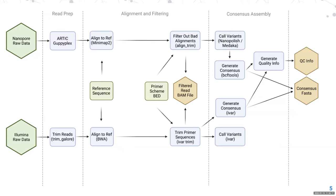On the left of the flowchart, we start with raw data for Nanopore and Illumina. Then we move to the read prep stage. For Nanopore, that's the ARTIC guppyplex stage, which takes all individual read files, performs quality control on them, and puts them into one easy-to-handle FASTQ file. On the Illumina side, you have trim reads using trim galore, which takes off adapter sequences — sequences required for the sequencer to work but not representative of the SARS-CoV-2 genome, so they need to be removed or they will mess up your alignments.